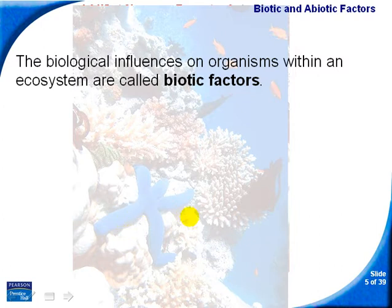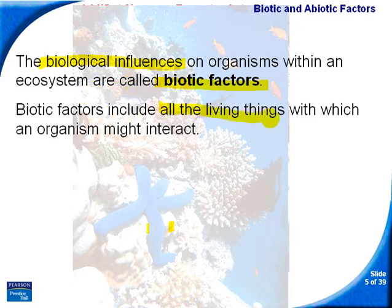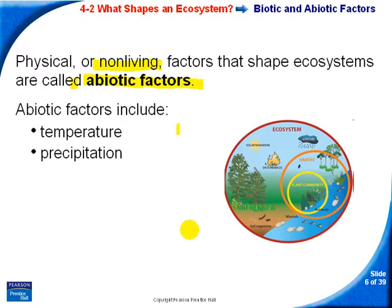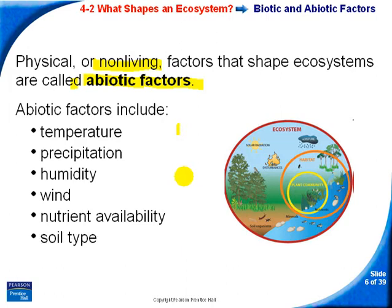The biological influences that an ecosystem faces are called biotic factors. These are biological influences on organisms and can include all the living things which that organism will interact with — for instance, another animal or plant life. Non-living factors are called abiotic factors and can include things like temperature, precipitation, humidity, wind, availability of nutrients, soil type, and sunlight.